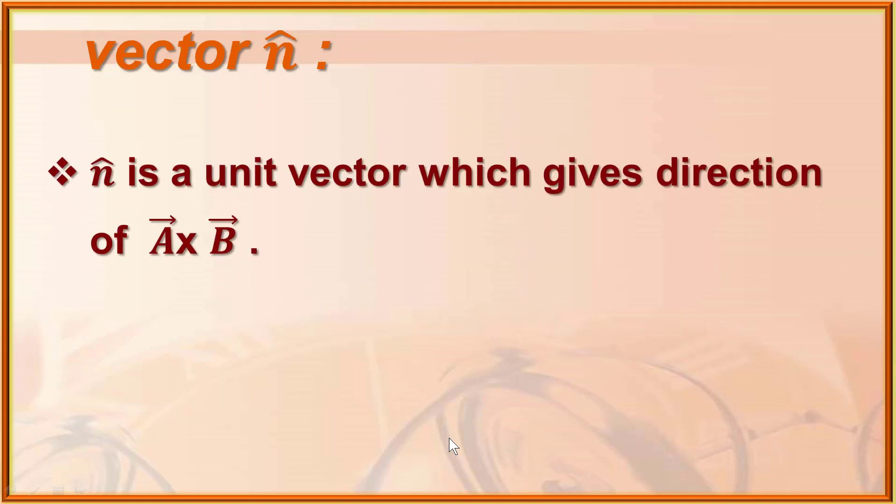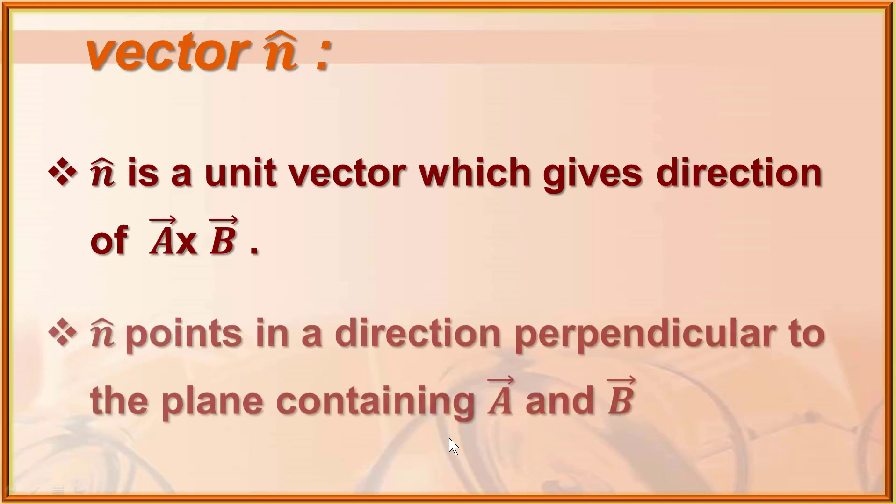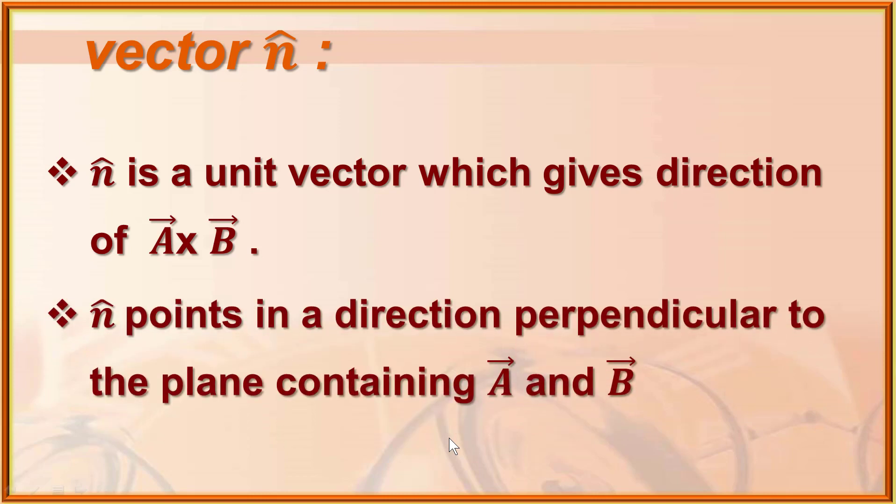n̂ is a unit vector that gives the direction of a cross b. It points in a direction perpendicular to the plane containing vectors a and b. Since its magnitude is one, multiplying by n̂ does not change the magnitude of the resultant — it only specifies the direction. Without n̂, the definition of a cross b is incomplete.